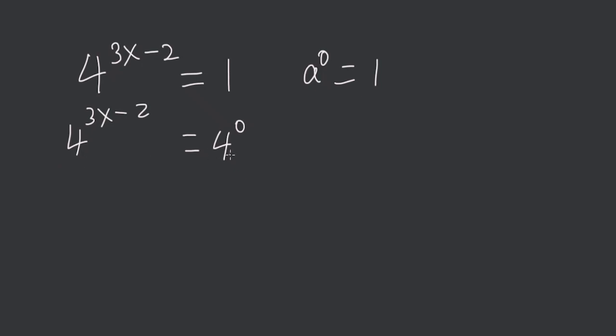So now that the bases are equal we can set the exponents equal to each other. So we have 3x minus 2 is equal to 0. Add 2 to both sides. 3x, this cancels out, is equal to 2.